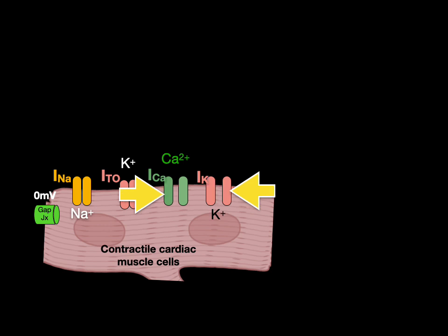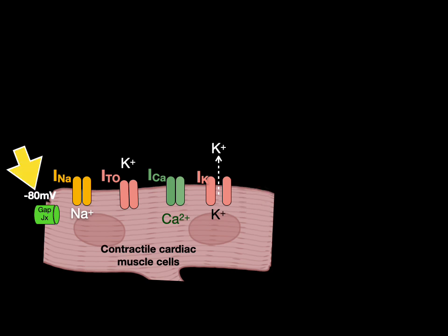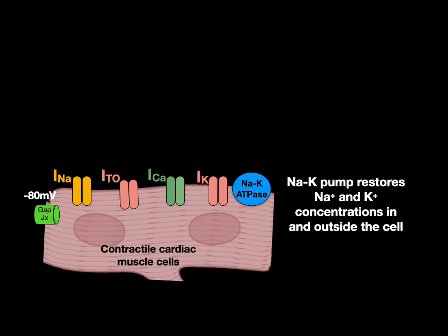The calcium and potassium channels both open, allowing an influx of calcium and an efflux of potassium at the same time — there's always a little more potassium effluxing. Around negative 10 to negative 20 millivolts the L-type calcium channels close, so now only the efflux of potassium remains, continuing until the membrane completely repolarizes back to negative 80 millivolts, at which point the potassium channels close. Throughout this whole action potential, the sodium-potassium pump restores sodium and potassium concentrations by pumping three sodium ions out and two potassium ions in against their gradients, requiring ATP.